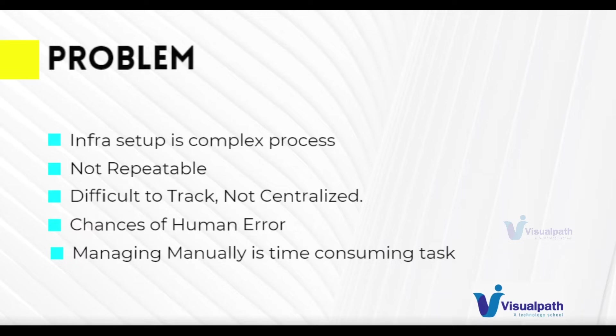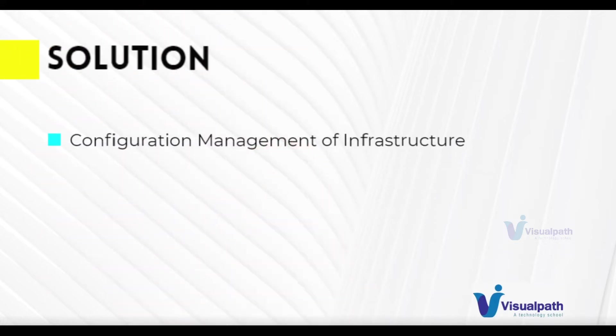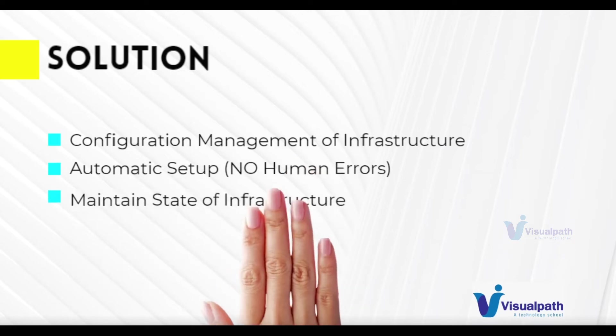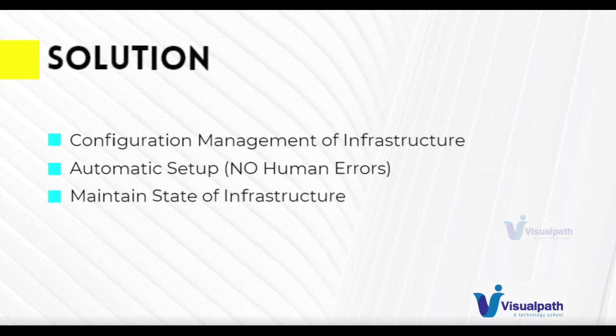In such a huge environment, doing all those things will take a lot of time. These are some common problems — there could be more. The solution is to have configuration management of the infrastructure at a centralized place, with everything automated so there is less chance of human error. You should always maintain a centralized state of the infrastructure, so all configuration is maintained centrally and changes can be deployed automatically. Any change management can be triggered very easily, and we can avoid human errors.